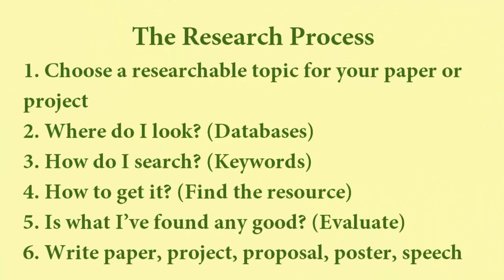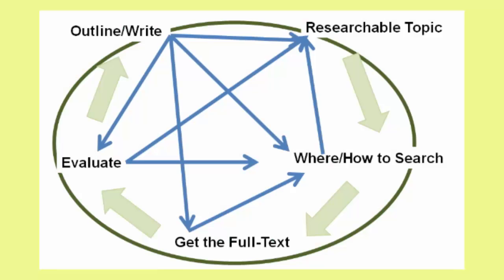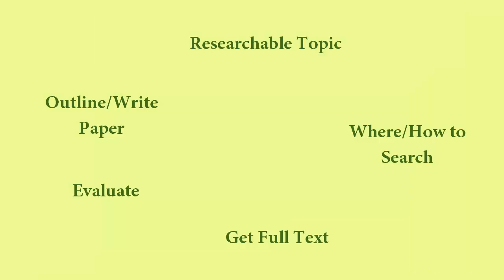So in theory, that is how the research process works. In reality, sometimes it will look a bit different, and that's okay. Sometimes you may pick your topic — say, Educational Television and Preschoolers — and after you've figured out where to search and what terms to use, you realize a lot of the articles you find interesting are more concerned with the electronic devices that children are using rather than only the content they are viewing. So you go back and add that to your topic.